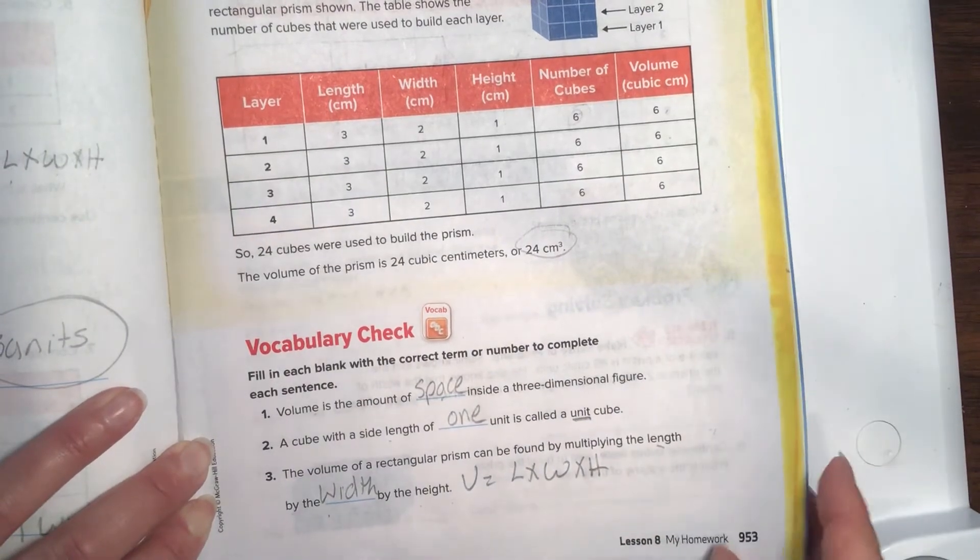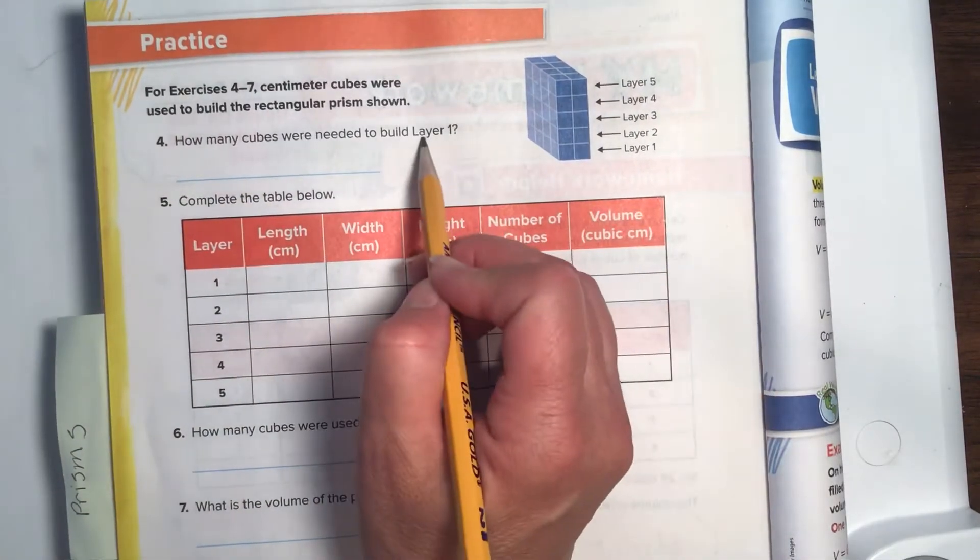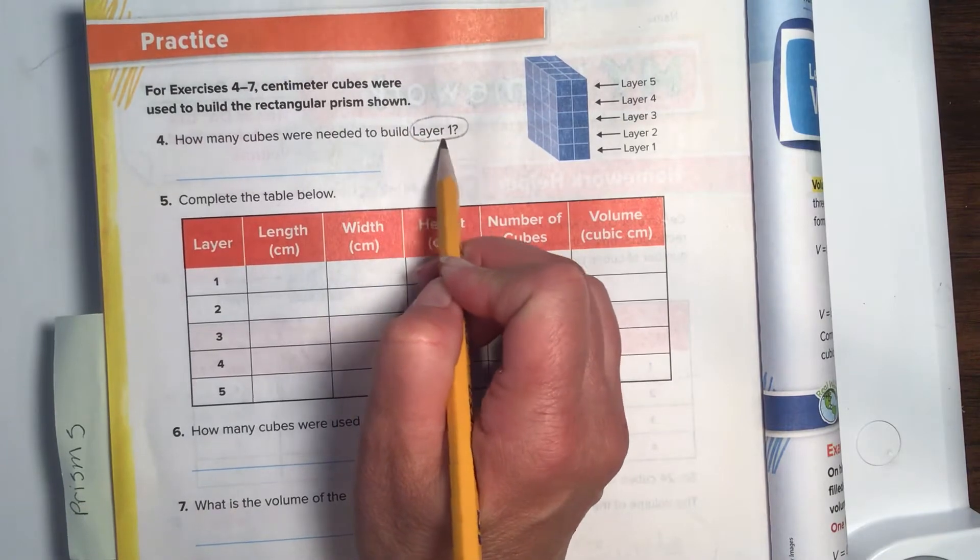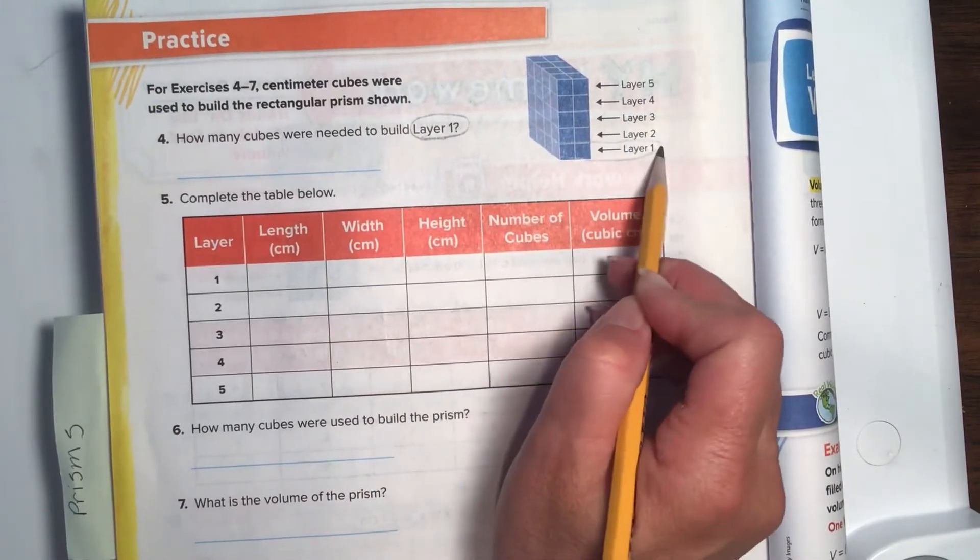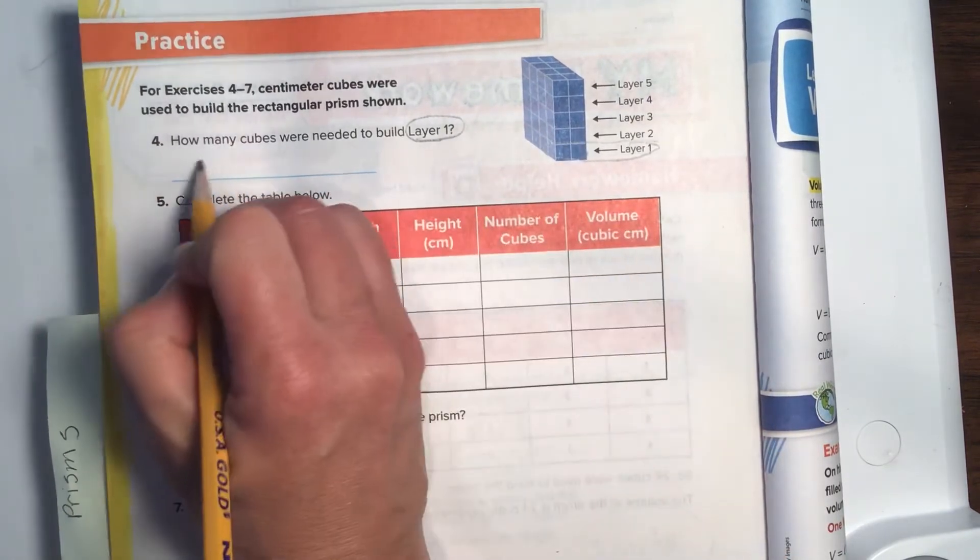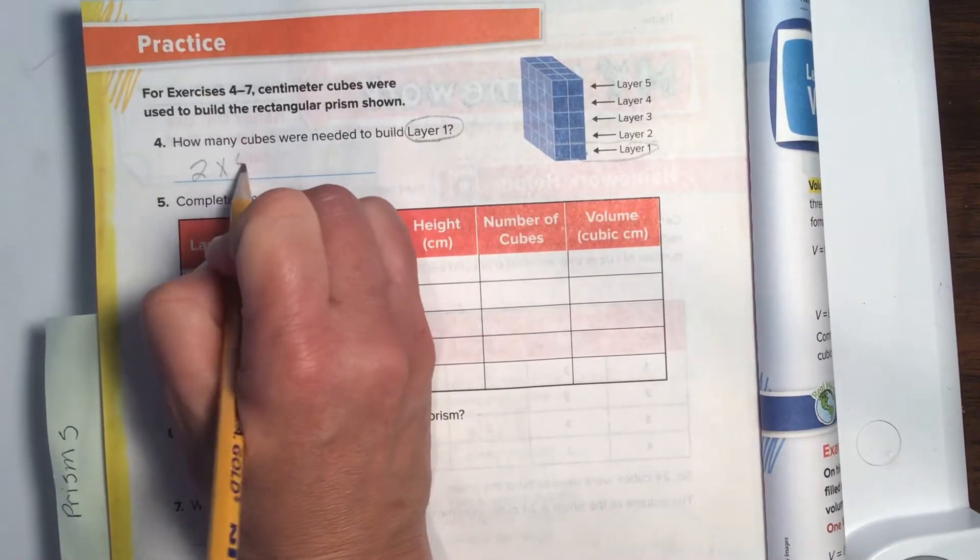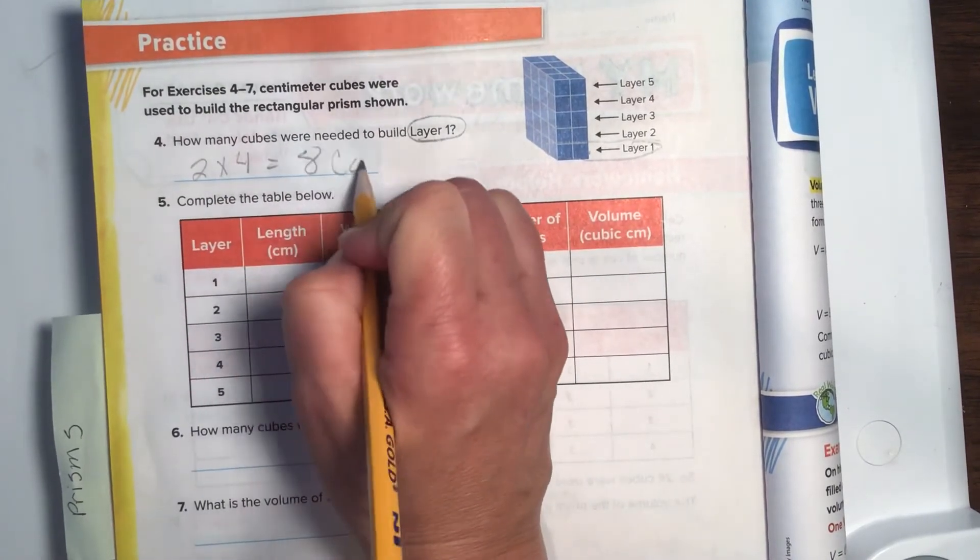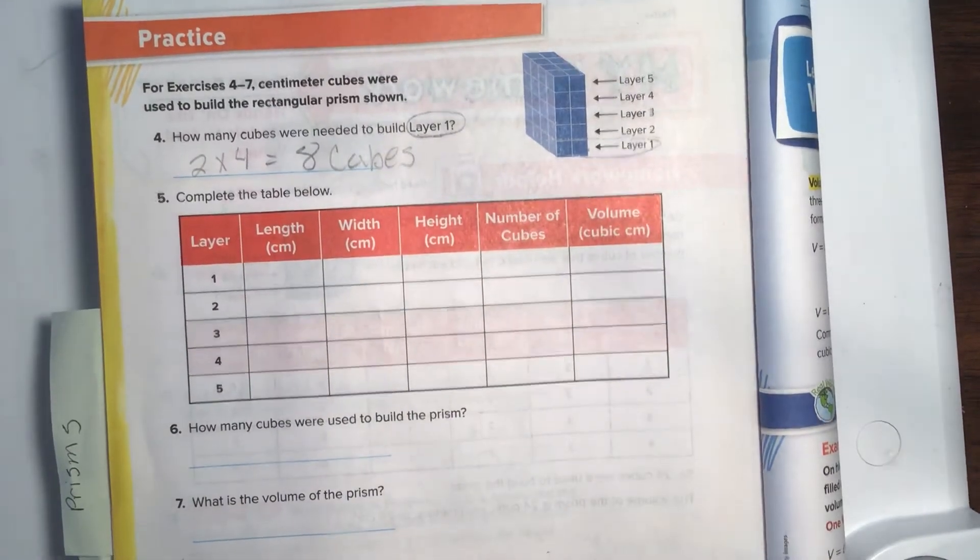Okay, let's turn to 954. Number four. How many cubes were needed to build layer one? Okay, if you're in a hurry, you'll probably try to count all of those, but it only wants to know how many in that layer one. So we have 1, 2, 1, 2, 3, 4. Two times four equals eight cubes. So that's our layer one, or our base.